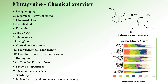Mitragynine is a compound that acts as a central nervous system stimulant and depressant, specifically as an atypical opioid. It belongs to the indole alkaloid family and has the formula C23, H30, N2, O4, signifying 23 carbon atoms, 30 hydrogen atoms, 2 nitrogen atoms, and 4 oxygen atoms in its structure. Its molar mass is 398.5 grams per mole and it boasts 4 optical stereoisomers.